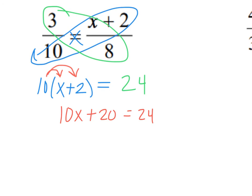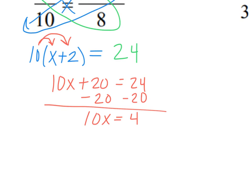My next step is I got to get rid of that positive 20. The only way to get rid of that positive 20 is to subtract 20. So I subtract 20, subtract 20, and I get 10x equals 4. How do I get rid of that multiply by 10? I divide by a 10. So I'm going to divide both sides of my equation by a 10.